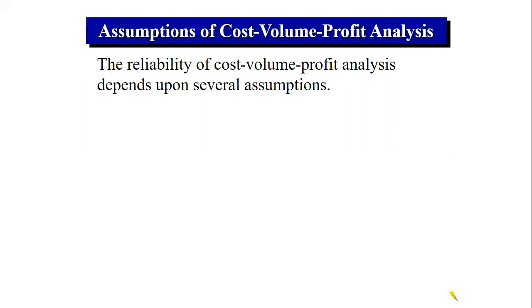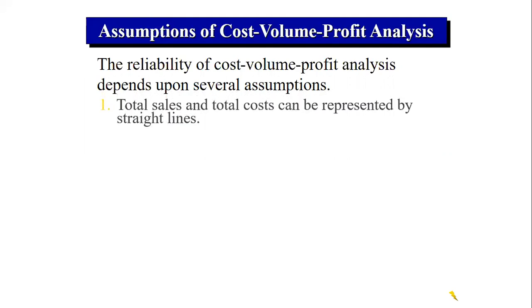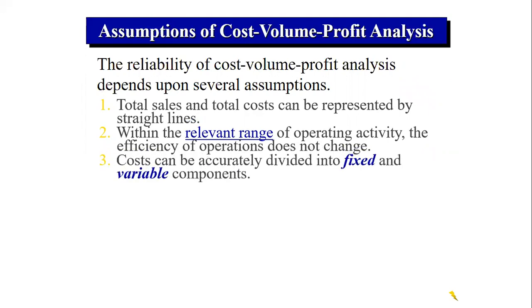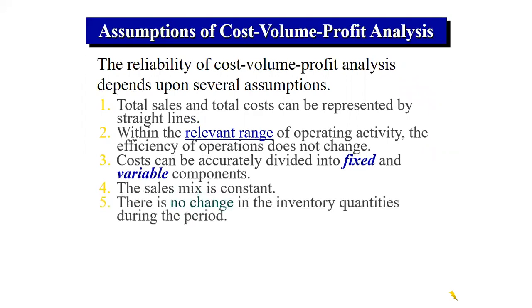Now let's look at the assumptions of cost-volume-profit analysis. First, total sales and total costs can be represented by straight lines within the relevant range — the normal operating activity where efficiency does not change. Second, costs can be accurately divided into fixed and variable. Third, the sales mix is constant. Fourth, there is no change in inventory quantities during the period.